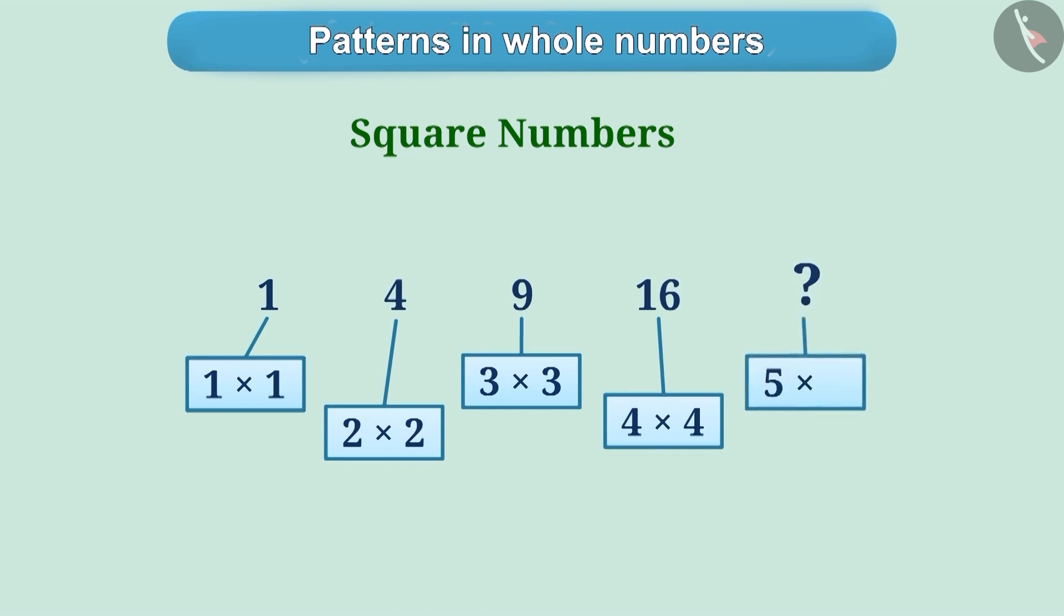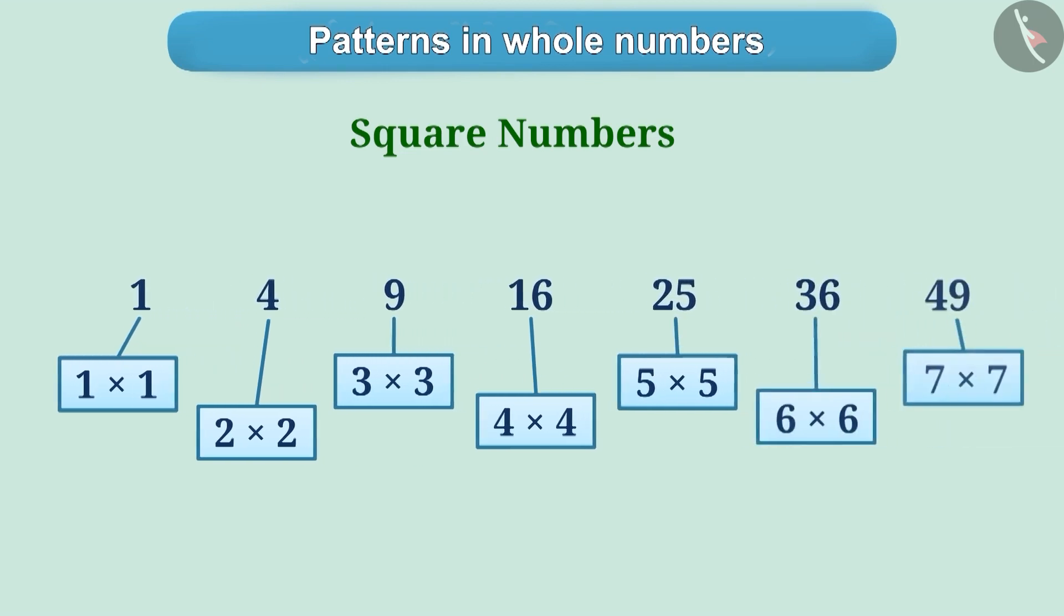Similarly, the next number 5 multiplied by 5 is 25. Following this pattern, you can find the next square numbers.